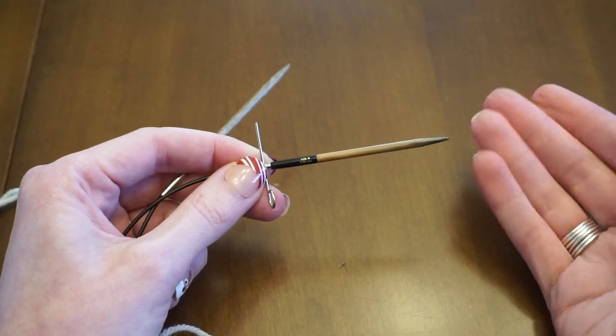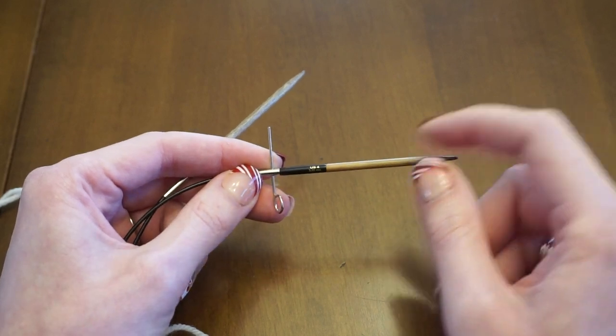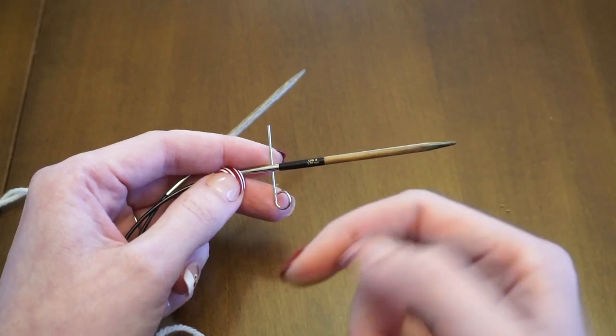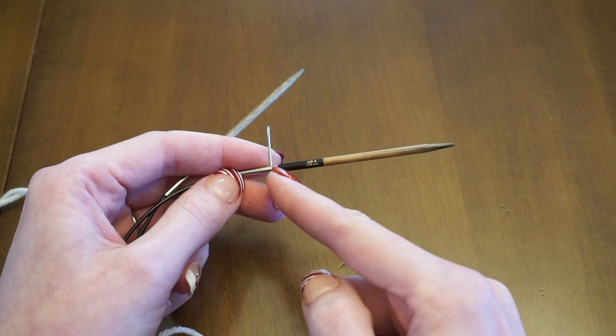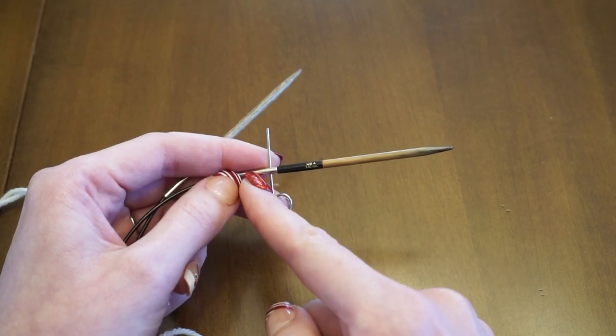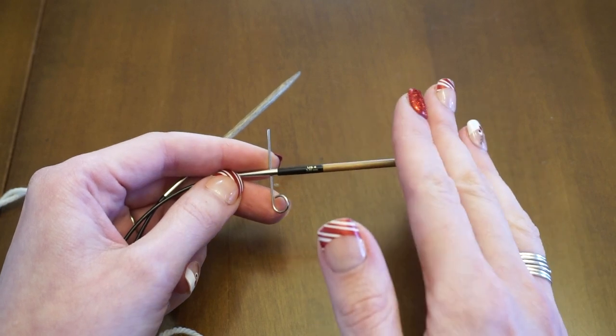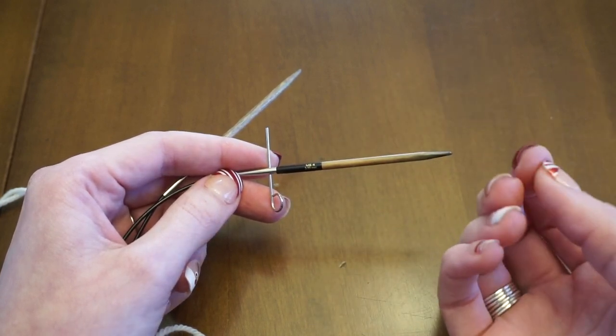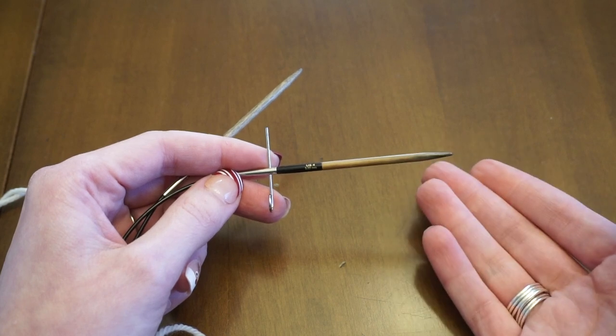And now another common thing that tends to happen to me is that the knitting needles get stuck on the cord. So basically what can happen is over time the threads on either the knitting needle or on the interchangeable cord can get a little misaligned and then essentially it becomes really hard to either tighten or unscrew the knitting needle.